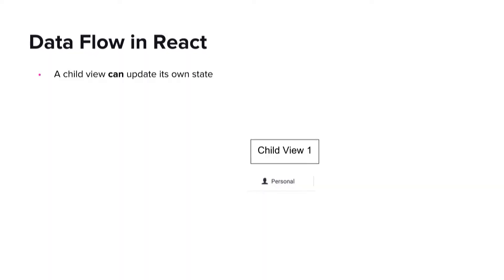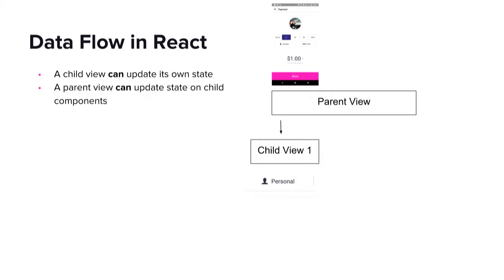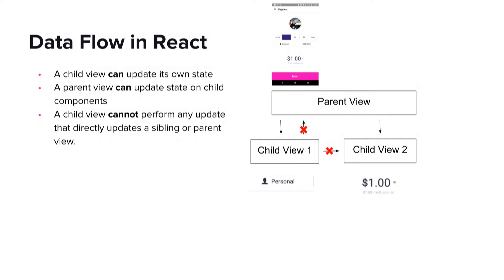Now let's think about what our rate and pay feature would look like if we were to architect it with React. In React, we have both child view components and parent view components. Our payment profile selector is an example of a child view component, and it's allowed to update its own state. Our screen for the rate and pay feature is our parent view, and it is also allowed to update a child view state. However, if we want to update a sibling view — like the total amount charged to the card — in response to a change to the payment profile, we are not allowed to go up from the child to the parent and then back down to the other child. This actually breaks the rules of the unidirectional data flow, and this is the source of the bug that we saw in the bidirectional data flow example earlier.